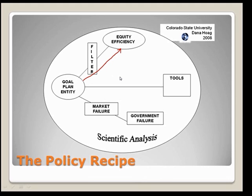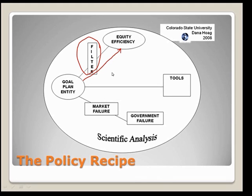Between equity and efficiency, I have the word 'filter' written. Even if you agree that equity and efficiency should be the goals of society, we're never going to all agree about what those ought to be. There's a filter that makes you and I each see equity differently. For example, how you were raised, whether you're a girl or a boy, whether you're rich or poor, whether you're from the south or north — all those things filter your view of what you think is fair or efficient. The key thing that makes this really interesting is that society has a really hard time setting goals because we can't even agree on what's fair.